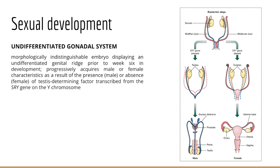Testosterone induces the development of male characteristics, and the Mullerian inhibiting substance causes the degeneration of the female reproductive ducts. In the absence of this male-determining SRY gene, neutral gonads become ovaries and female features develop. The Mullerian ducts give rise to female structures, and the Wolffian ducts give rise to the male duct system. With the SRY gene present, we develop into our male reproductive system; with the SRY gene absent, we end up seeing the female reproductive system develop.